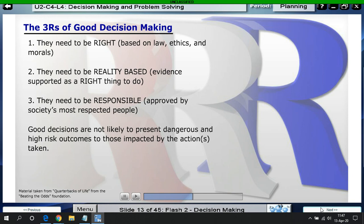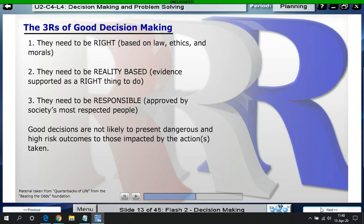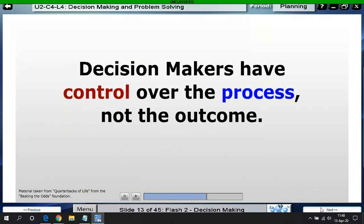Just because a desired outcome is achieved by chance does not make it a good decision. Outcomes achieved by chance are often devoid of critical thought and responsible planning. Good decisions and outcomes need to pass the 3 R's test. The decision needs to be right, based on law, ethics, and morals. It needs to be reality-based, with evidence supporting it as the right thing to do. And it needs to be responsible, in the context of social standards of right versus wrong. One cannot anticipate or control all the variables that may impact the decision once it is set in motion. Even though you know all there is to know about flipping a coin, you cannot control the number of revolutions it will take once it leaves your hand. While you cannot control the outcome of a decision, you can put the odds in your favor of getting what you want if you carefully and responsibly manage the decision-making process.